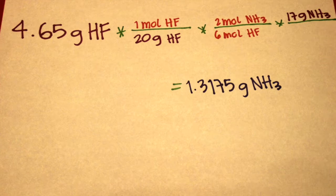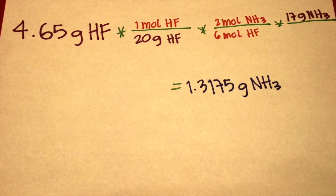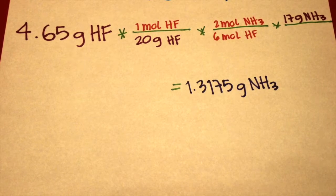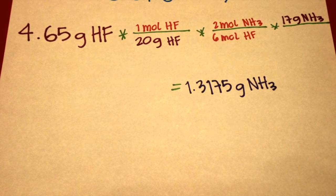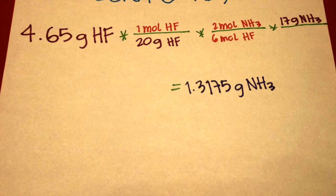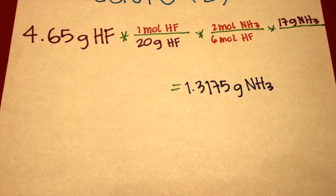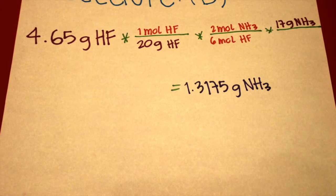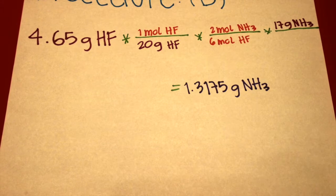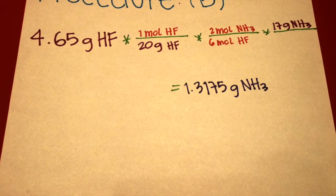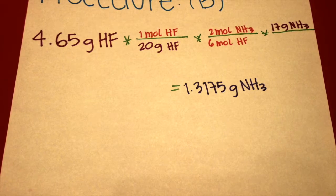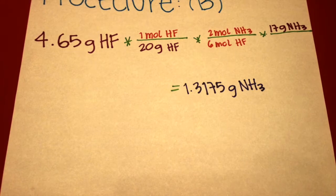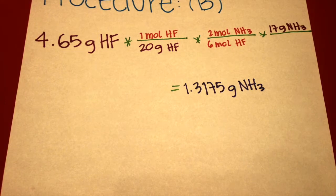This is the procedure for question B. First, I copied the 4.65 grams of hydrogen fluoride given in the problem. Then I multiplied that times 1 mole of hydrogen fluoride over 20 grams of hydrogen fluoride, which is the mass of a single mole. Then I multiplied that times 2 moles of ammonia over 6 moles of hydrogen fluoride, because those are the mole amounts in the reaction. Then I multiplied that times 17 grams of ammonia over 1 mole of ammonia. The answer was 1.3175 grams of ammonia.